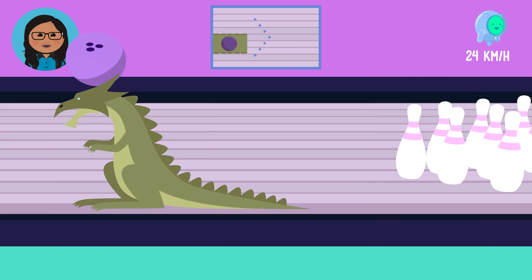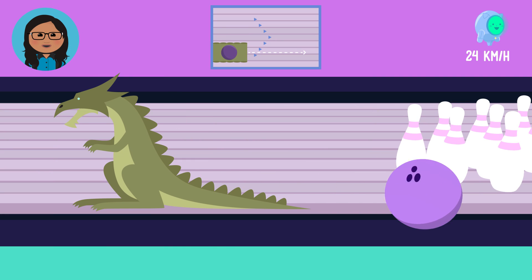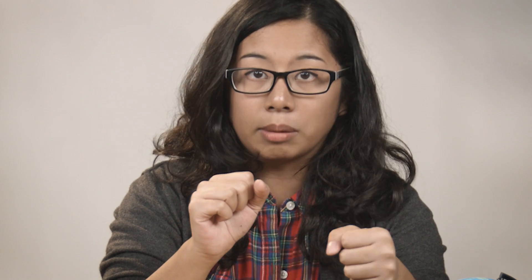Let's give it another go. This time we'll change the angle of the ball ramp so that it's pointed pretty far on the right side of the lane. We missed both criteria completely.